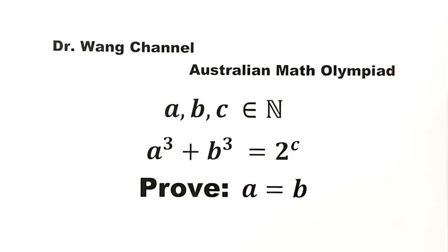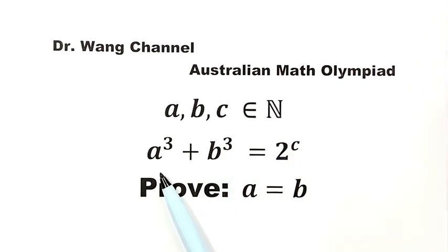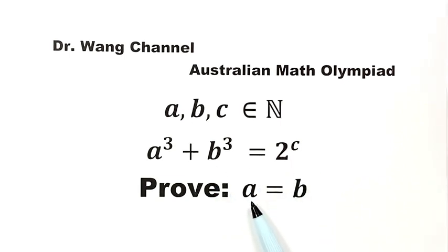In this video, we solve a question from the Australian Maths Olympiad. The question is: A, B, C are natural numbers, A cubed plus B cubed equals 2 to the power of C. Prove that A equals B.